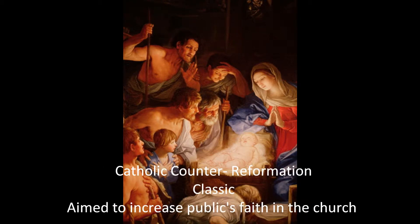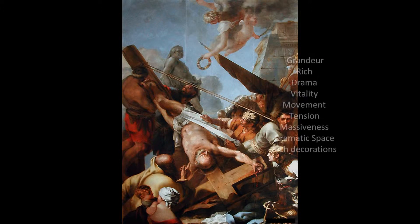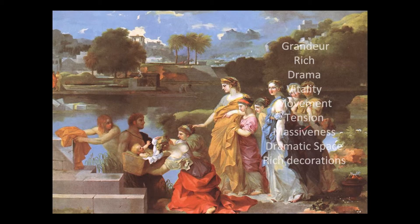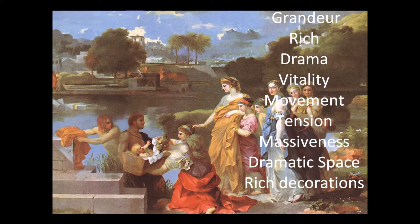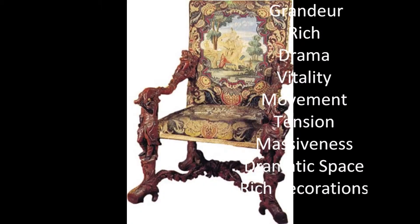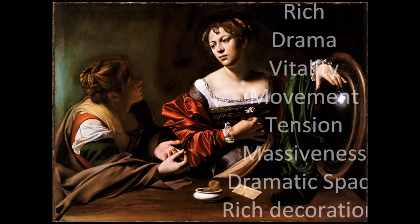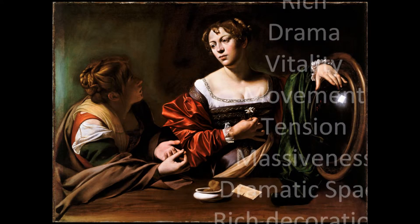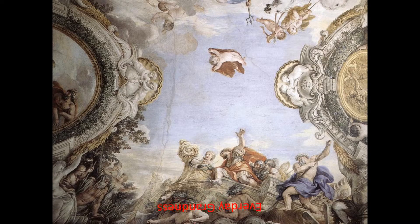Baroque art first started in Italy during the 16th century in reaction to the Protestant Reformation. Although highly religious, some secular artists used this technique to portray wealthy aristocrats and leaders. The church used art patronage to create religious art, in the hope that it would increase public faith in the church. This was tied into the Catholic counter-Reformation, which led to the ornate church decorations of today, such as painted ceilings.